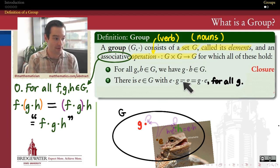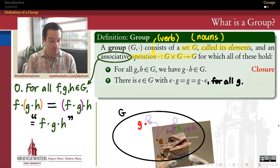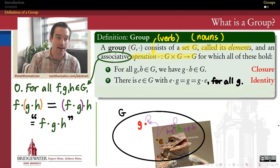And don't be misled by the fact I'm using g here. I could use anything. If I have an element h, h e needs to be equal to e h. So we call such an element an identity, and we say that this is the identity property for groups.